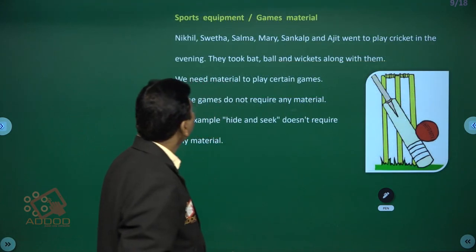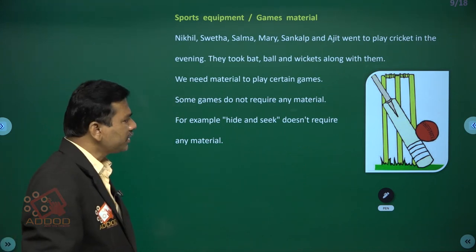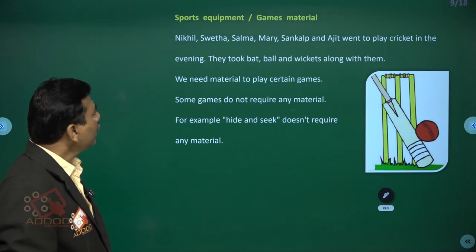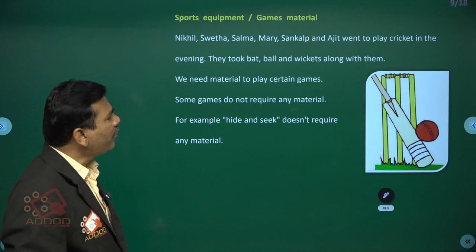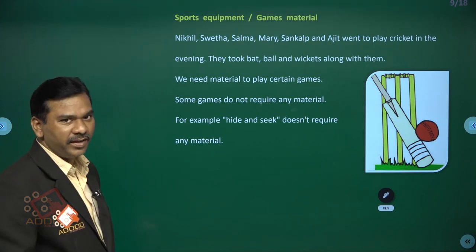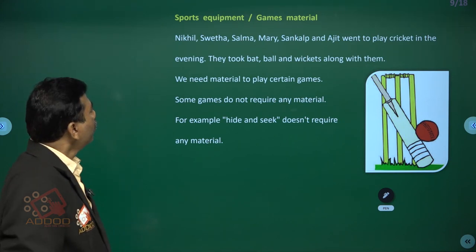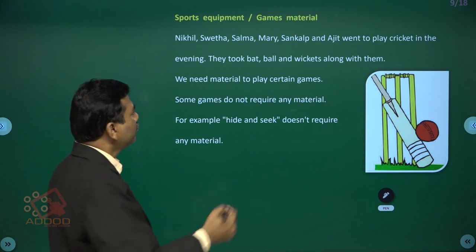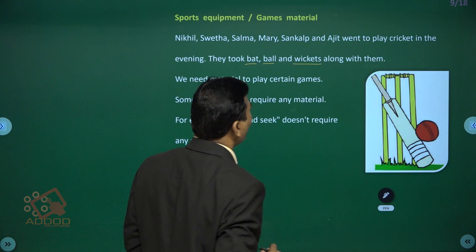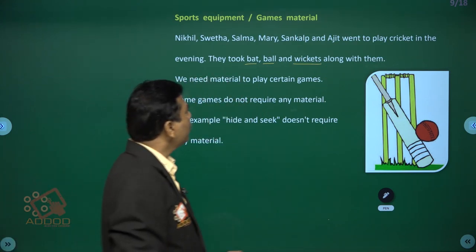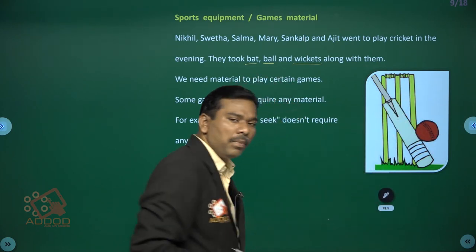Next, sports equipment or games material. Swatha, Salmagh, Merry, Sunkul, and Jet went to play cricket in the evening. They went to the nearby ground and took a bat and ball along with them. The material required includes bat, ball, vickers, and other cricket equipment.